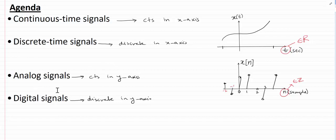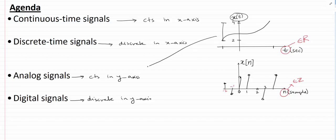Let's talk about analog and digital signals now. As the definition suggests, analog signals are continuous in the y-axis. We already have a signal which is continuous on the y-axis — let's call the amplitude range from 2 to 4. This signal x of t can take any amplitude from 2 to 4, such as 2, 2.001, 2.002, and so on. Therefore, this signal is an analog signal.